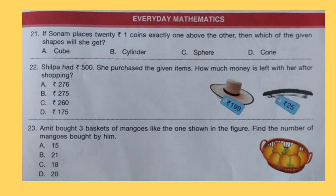Question 21: If Sonam places 20 rupee 1 coins exactly one above the other, then which of the given shapes will she get? Select your answer. You can also write down your answer in the comment box. Answer key is given at the end of the video.